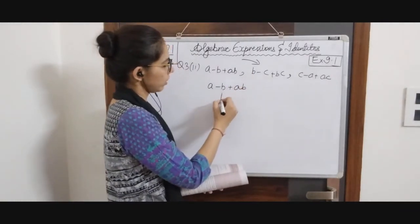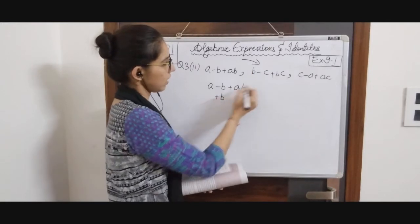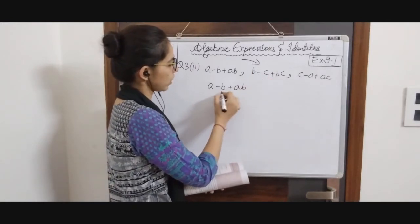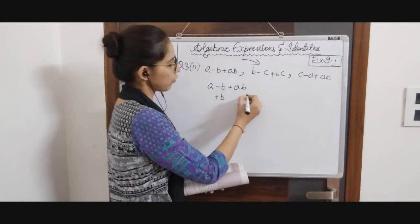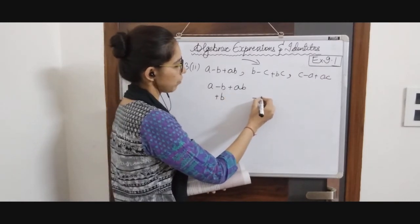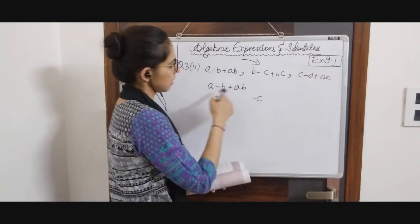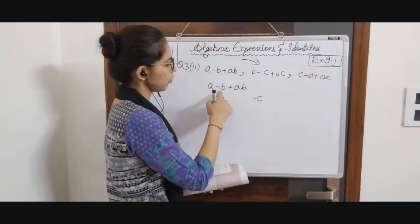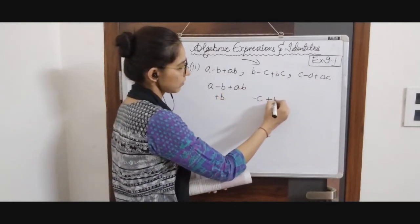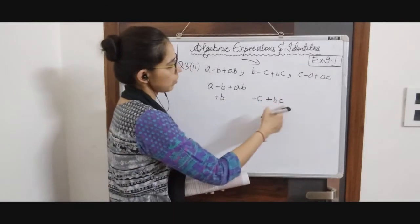B we will put here with a plus sign. Then minus C — we don't have a like term for minus C, so we will be putting it separately. Then plus BC — BC we don't have a like term for either, so we will be writing it separately but in the same row.